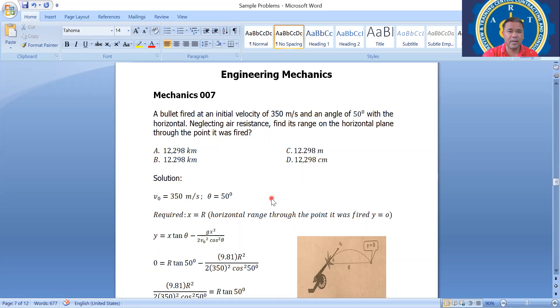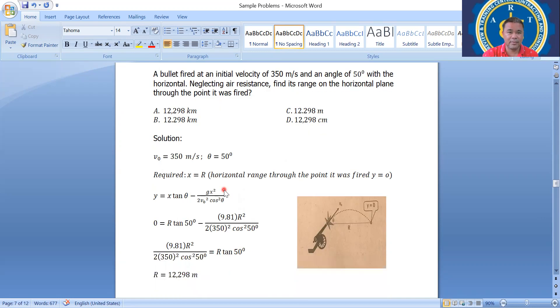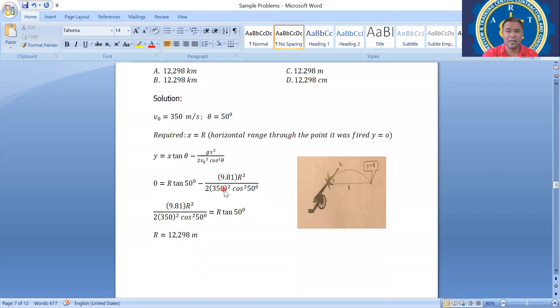This is the same as Mechanics 006, but the required is different. In 006, the required was the height. Now in 007, the problem requires the range, or x, or r. So we have the initial velocity of 350 meters per second and the angle is 50 degrees. The required here is x, or r, or range.